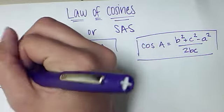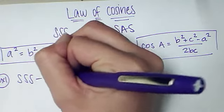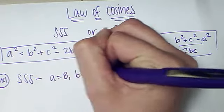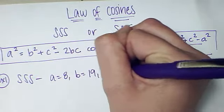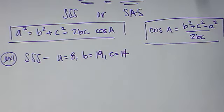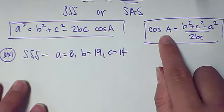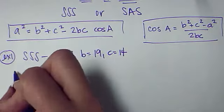We have three examples to look at. The first is a side, side, side, where a equals 8, b equals 19, and c equals 14. And to solve the triangle, you're going to find the three angles that go along. Because you don't have any angles to begin with, you cannot use this formula. Instead, you can use this one to start by finding angle A. So, here's our solving.